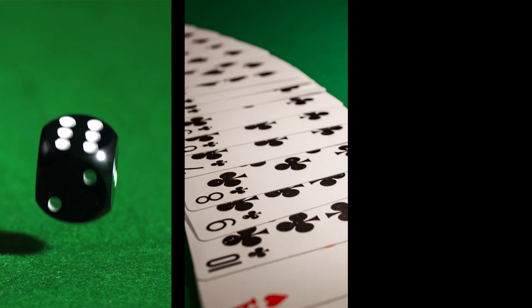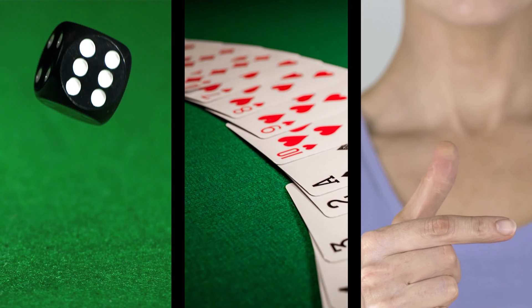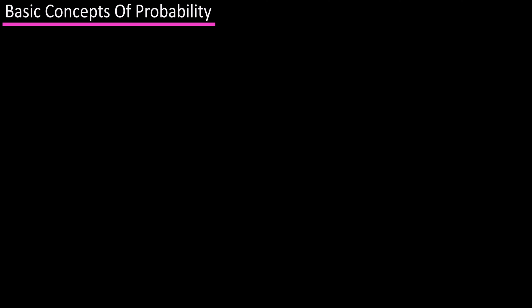Rolling a die, drawing a card out of a deck, and flipping a coin are all things we're familiar with, and these are often used to discuss the basic concepts of probability.